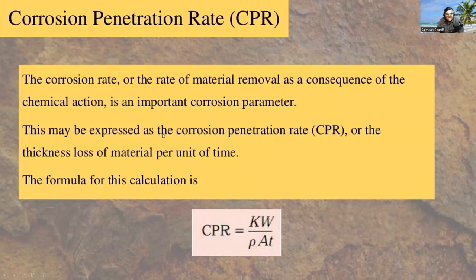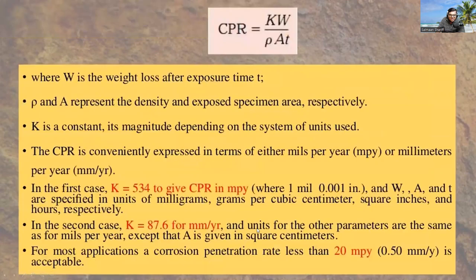Corrosion penetration rate defines the corrosion rate or the rate of material removal as a consequence of a chemical reaction. It is expressed as CPR or thickness loss of material per unit time. The formula is CPR equal to KW divided by rho times A times T.